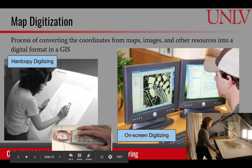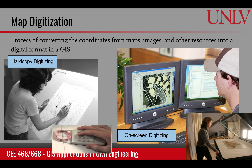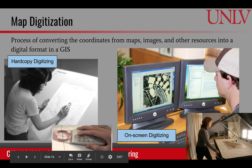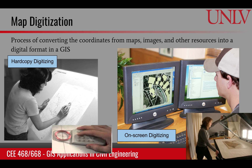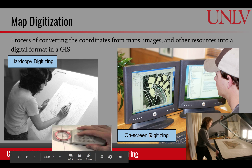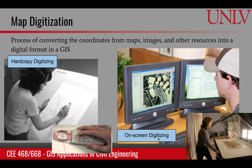Hard copy digitization is a painstaking process where you take a printed map and use a special mouse with a crosshair pointer to digitize each point of lines, polygons, and points. Nowadays, it's more common to scan the map, bring it into a computer system, and then digitize lines, points, and polygons using on-screen digitization — which you will be performing in your lab.